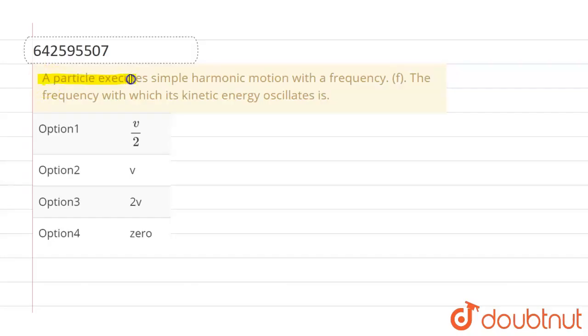...is a particle executes simple harmonic motion with frequency f. The frequency with which its kinetic energy oscillates is... and the given options are frequency of SHM by 2, frequency of SHM, two times frequency of SHM, and zero.